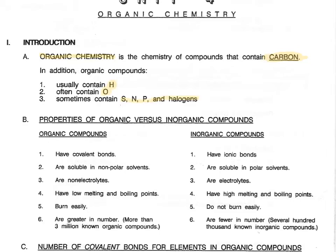They also contain things like hydrogen, oxygen, sulfur, nitrogen, phosphorus, and the halogens. Although much more rarely the halogens are naturally occurring, but we're going to use them a lot in this unit.